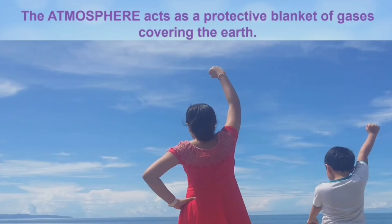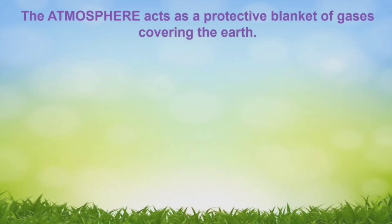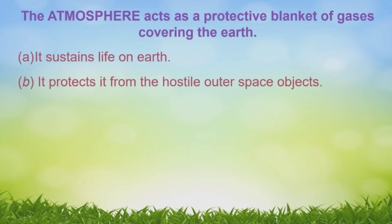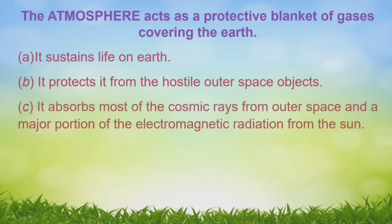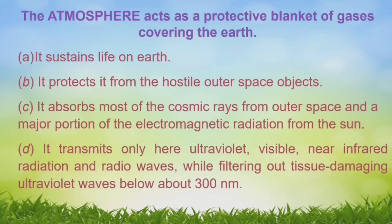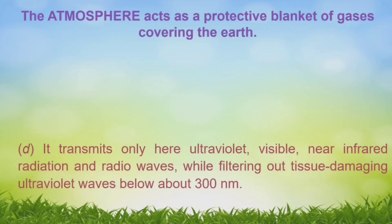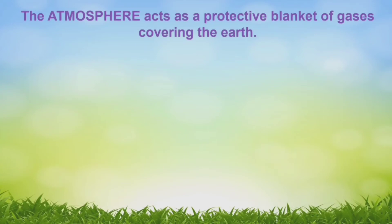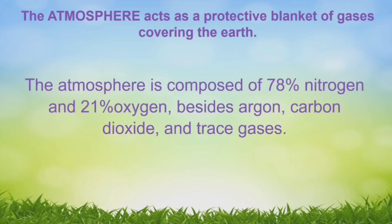The atmosphere acts as a protective blanket of gases covering the earth. It sustains life on earth and protects it from hostile outer space objects. It absorbs most cosmic rays and a major portion of electromagnetic radiation from the sun, transmitting ultraviolet, visible, near-infrared radiation, and radio waves while filtering out tissue-damaging ultraviolet waves below about 300 nanometers. The atmosphere is composed of 78% nitrogen, 21% oxygen, and 1% argon, carbon dioxide, and trace gases.